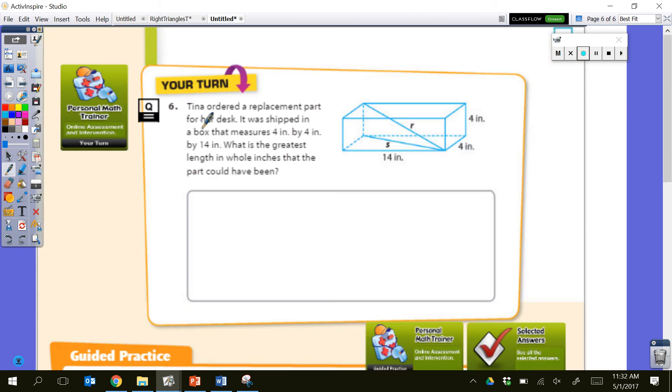All right, now we're going on to the your turn. So this is another three-dimensional question, so there's going to be a couple triangles that we're looking at in here, and we are given enough information to solve. So Tina ordered a replacement test, a replacement type of her desk. It was shipped in a box that measured four inches by four inches by 14 inches. What is the greatest length in whole inches that could be that the part could have? So again, that's going to be that diagonal across that box. We have 14 inches and four inches and four inches. So first thing we need to do is, again, is determine this distance right here, the hypotenuse of this base triangle.